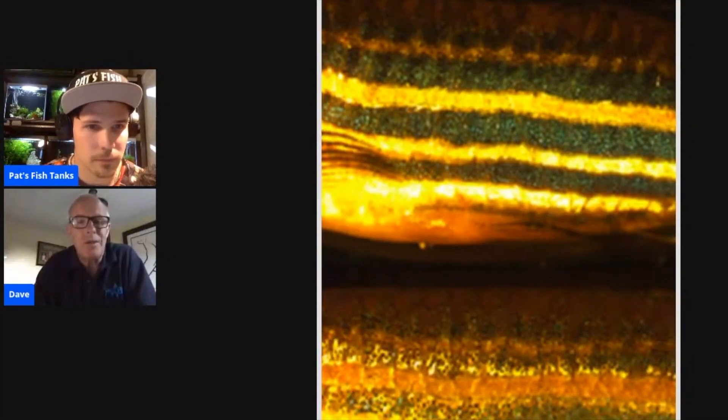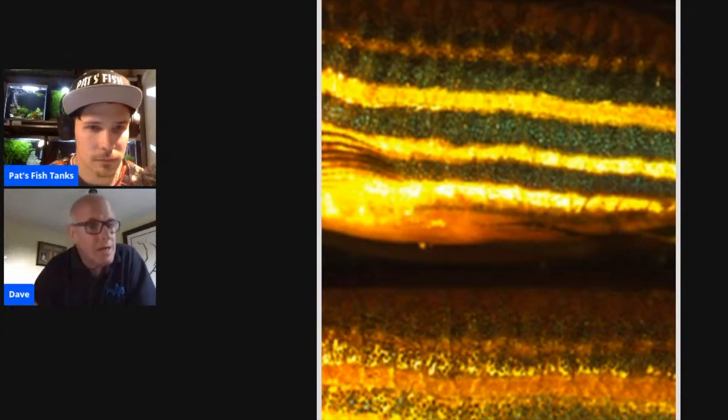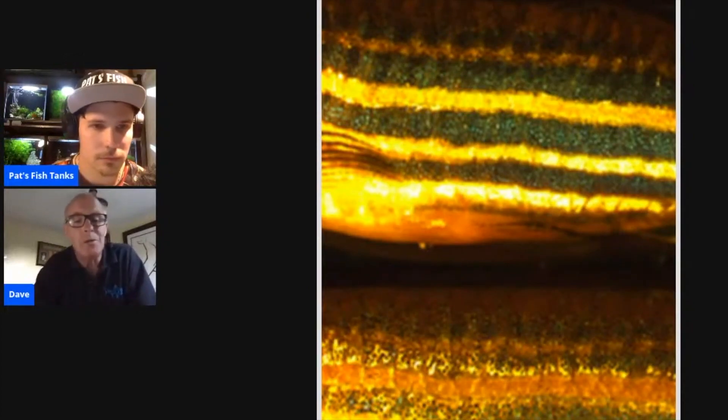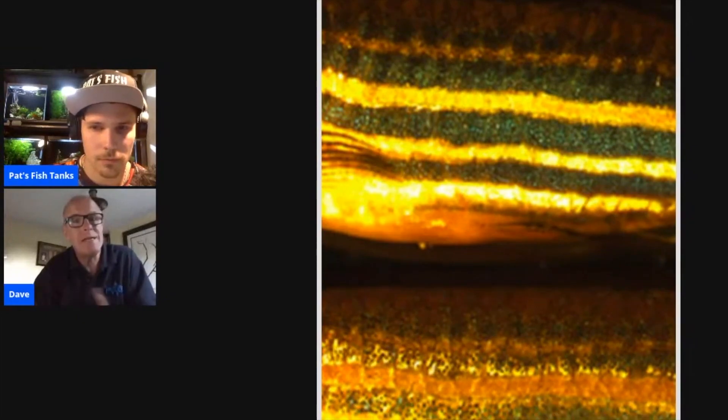The image we've got here is just a good example of a zebra danio, or in fact, two zebra danios. But it just shows how the pigment and where it is in the chromatophore can actually influence the color of the fish.